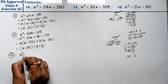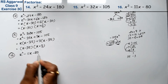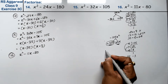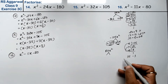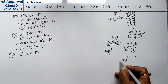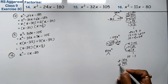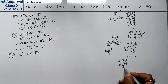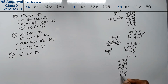Let's do question number 16. Question number 16 is x squared minus 11x minus 80. Now we have to find the factors of 80: 2 fours are 8, 2 twos are 4, 2 tens are 20, 5 and 5, and 1.